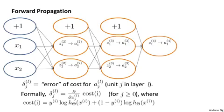One useful intuition is that backpropagation is computing these delta superscript l subscript j terms. And we can think of these as the error of the activation value that we got for unit j in the layer, in the lth layer.